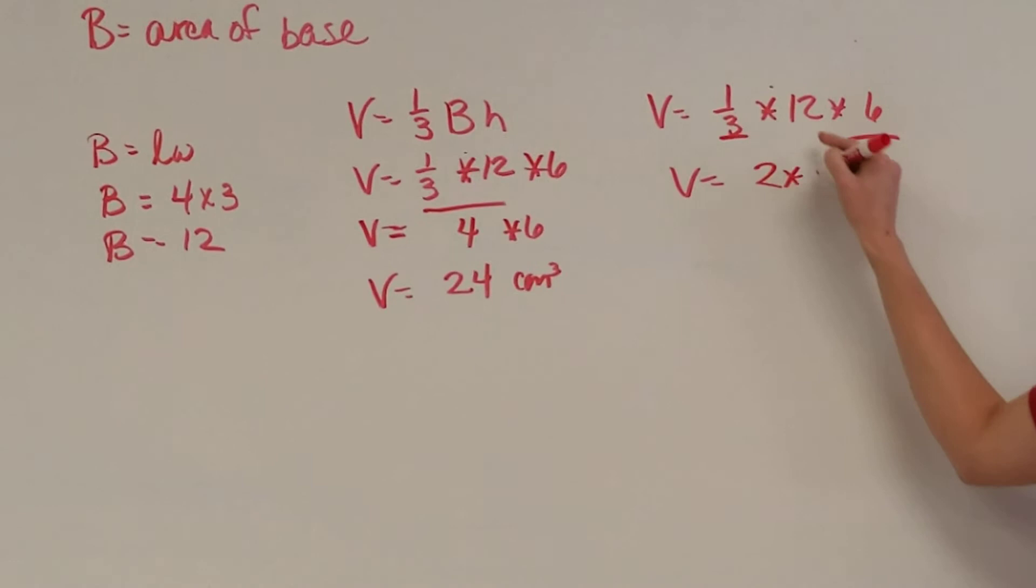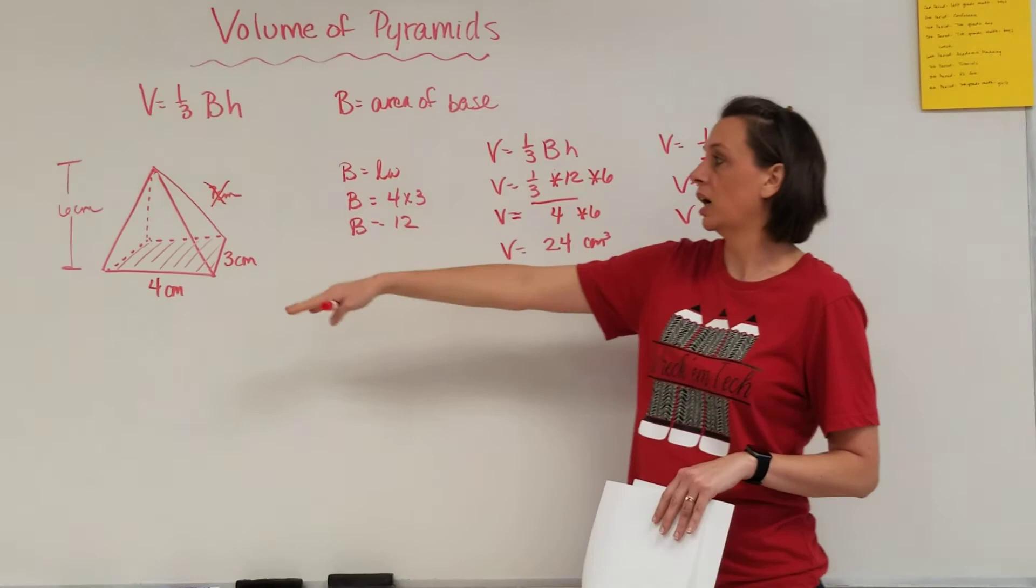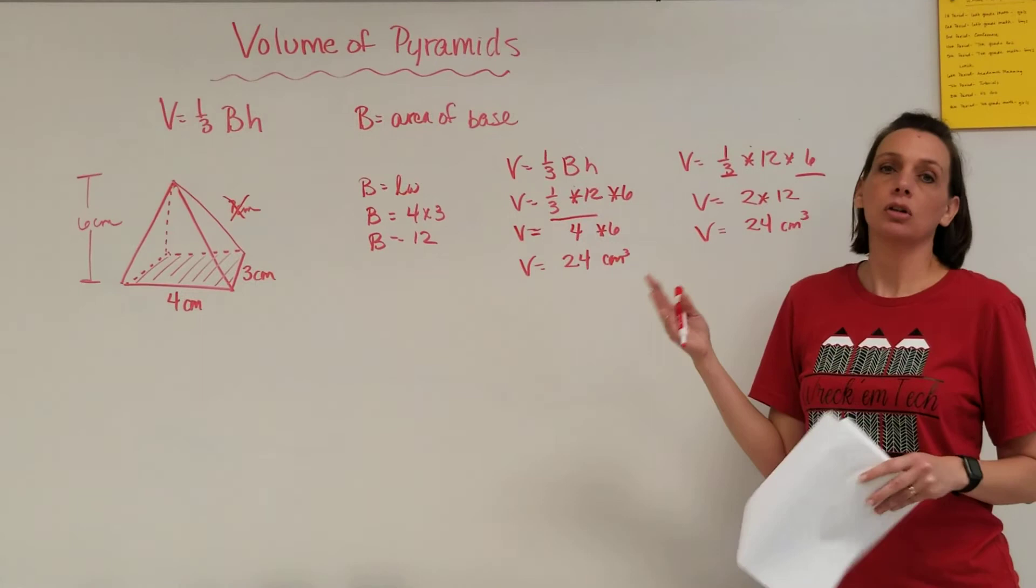So if you have a problem where the height is easier to divide by 3, or maybe the base is easier to divide by 3, go ahead and do that first. It shouldn't matter which one it is. Just make sure when we're looking at the base that we're only looking at this rectangle on the bottom.